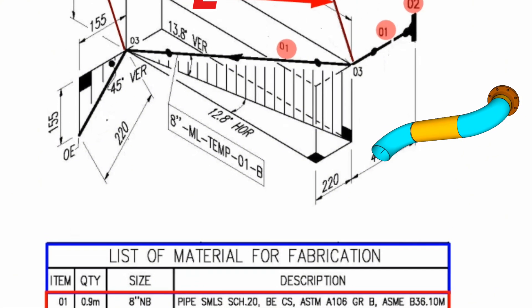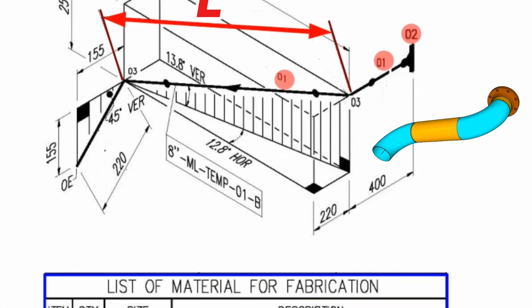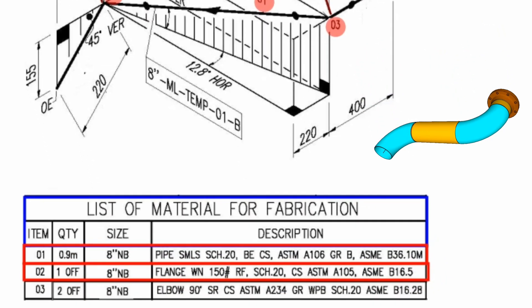Item number 3 has been used in two places of this pipeline. The item number 3 quantities are 2-off, size 8-inch elbow, 90-degree, short radius, carbon steel, ASTM A234, grade WPB, schedule 20, ASME B16.28.